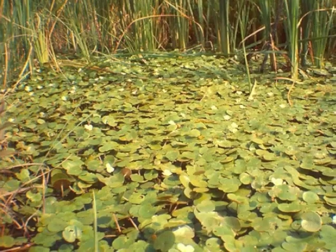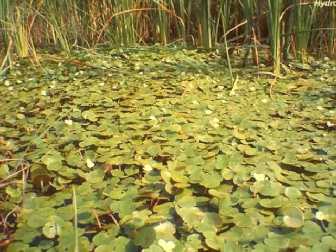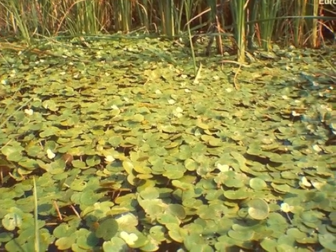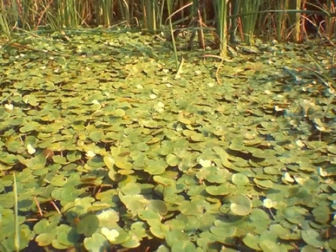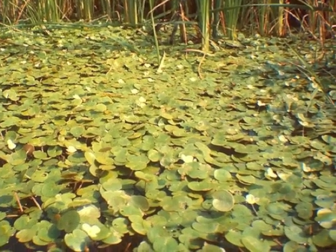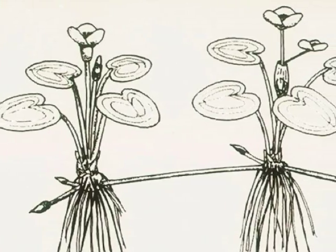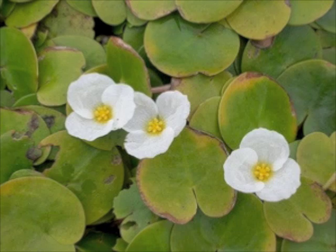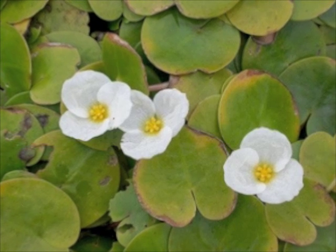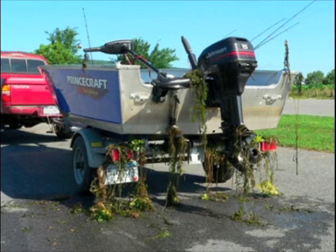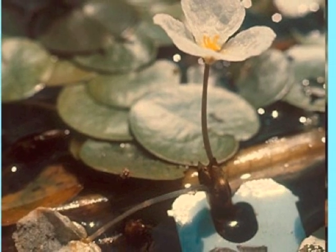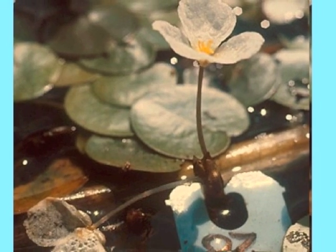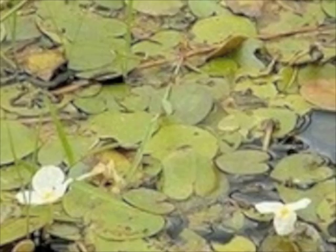The plant can regenerate each spring when dormant plant buds float to the surface and grow rapidly into tangled mats. The plant also produces horizontal runners that create new individuals. Frogbit spreads through the improper disposal by water gardeners, clinging to watercraft, trailers, and equipment. It also spreads naturally when plant pieces break off and float with the current.